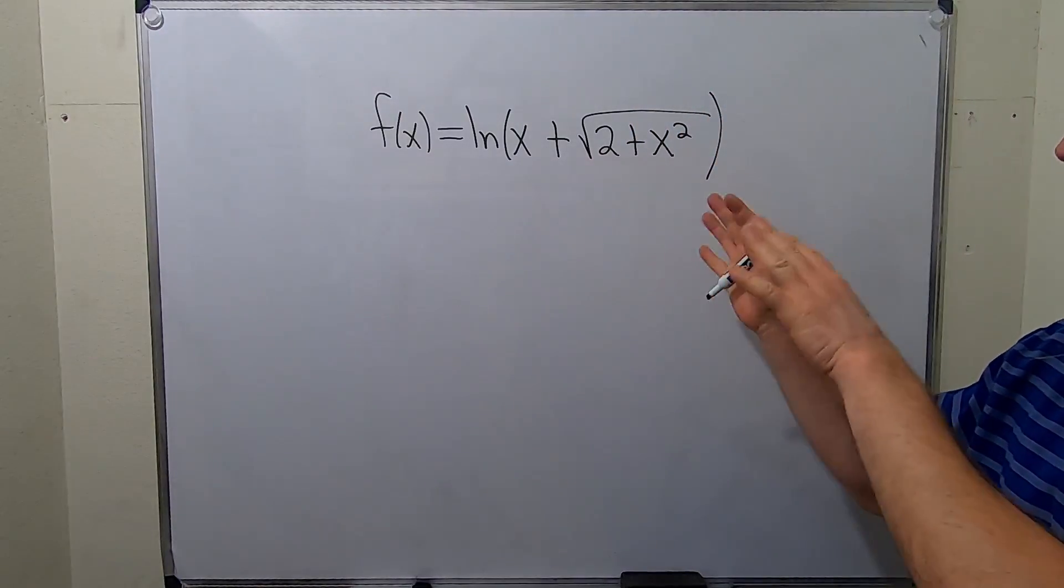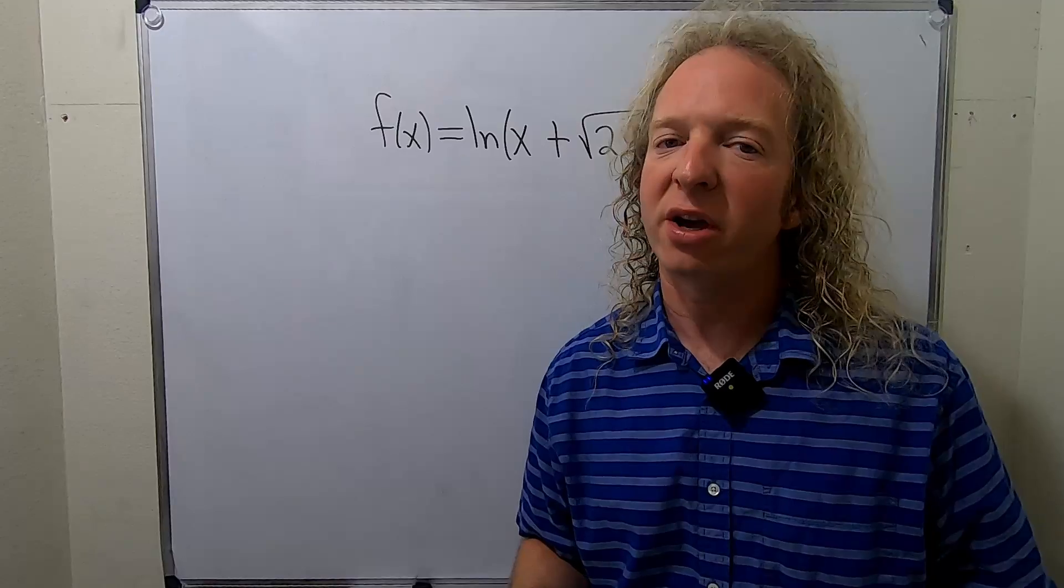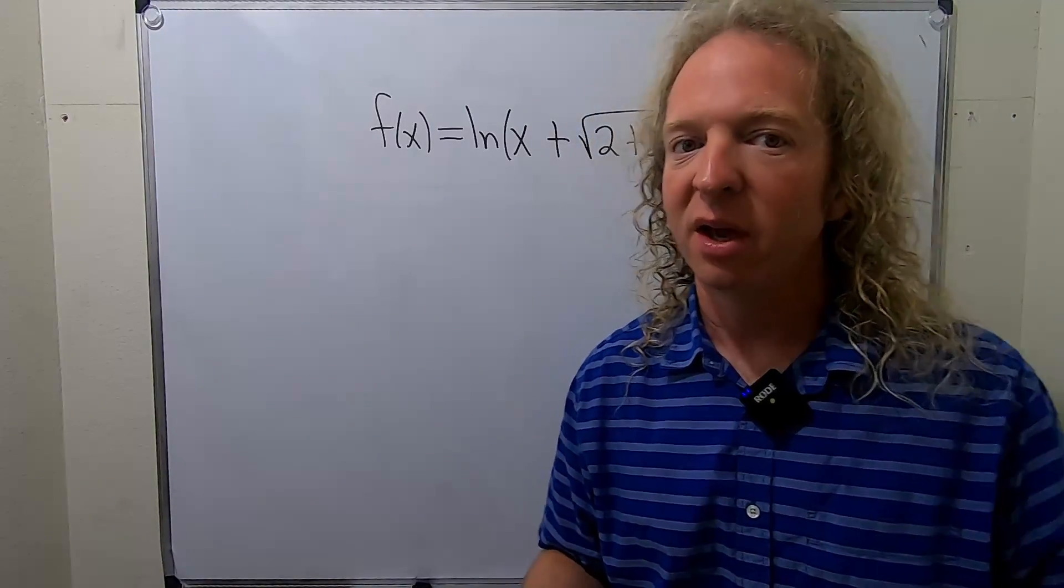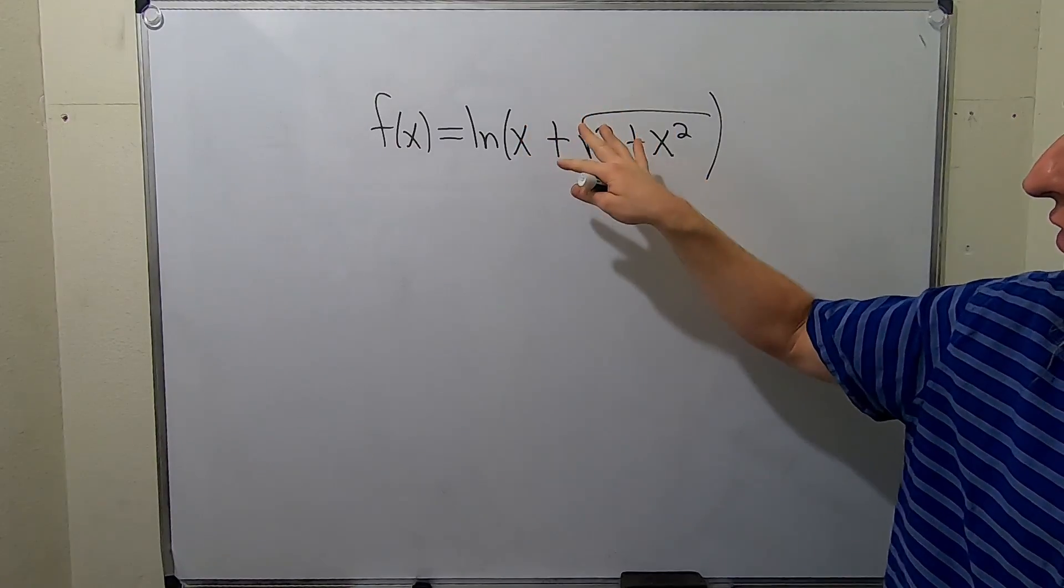In this problem, we're going to differentiate this function. Recall the derivative of the natural log of x is just 1 over x. So here, when we take the derivative, it's 1 over this times the derivative of all of this.